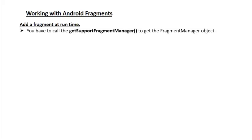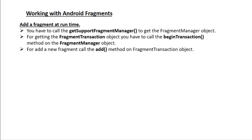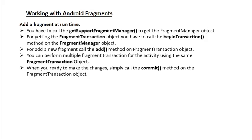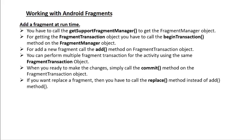You have to call getSupportFragmentManager to get the FragmentManager object. To get the FragmentTransaction object, call the beginTransaction method on the FragmentManager object. To add a new fragment, call the add method on the FragmentTransaction object. You can perform multiple fragment transactions for the activity using the same FragmentTransaction object. When you are ready to make the change, simply call the commit method on the FragmentTransaction object. If you want to replace a fragment, call the replace method instead of the add method.